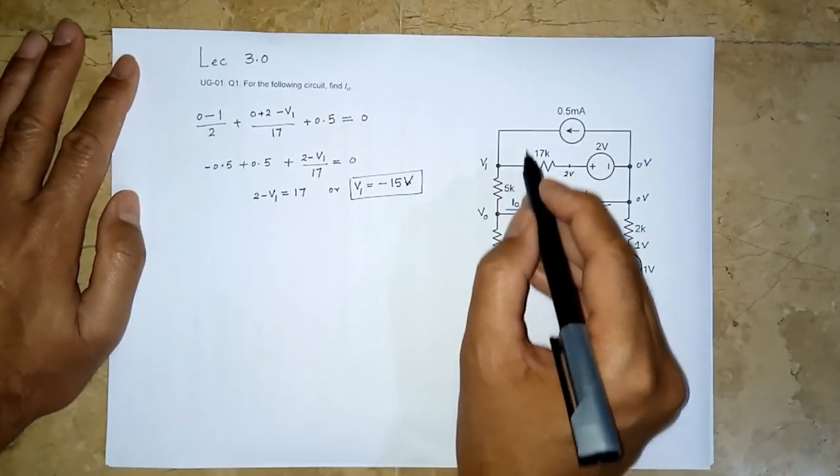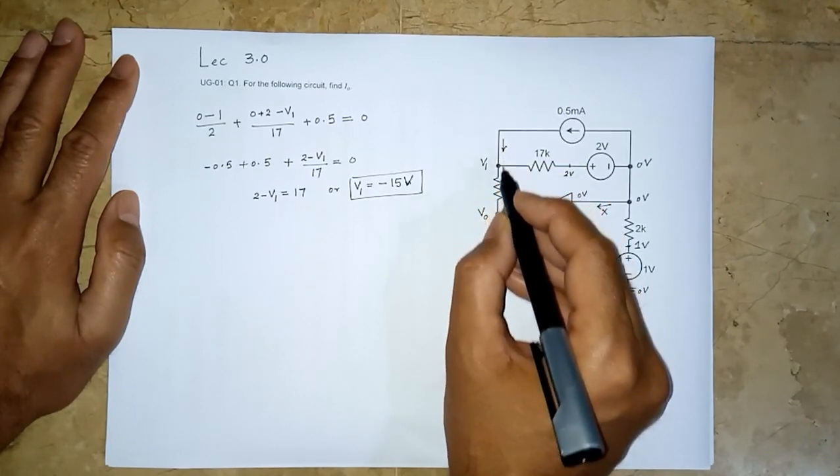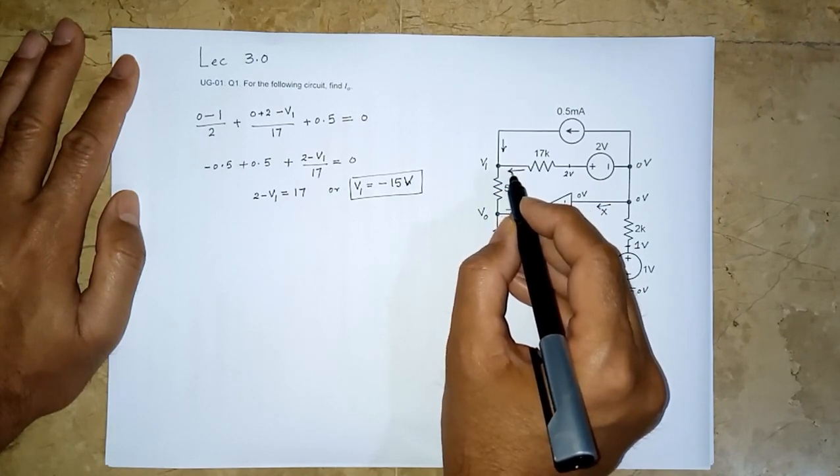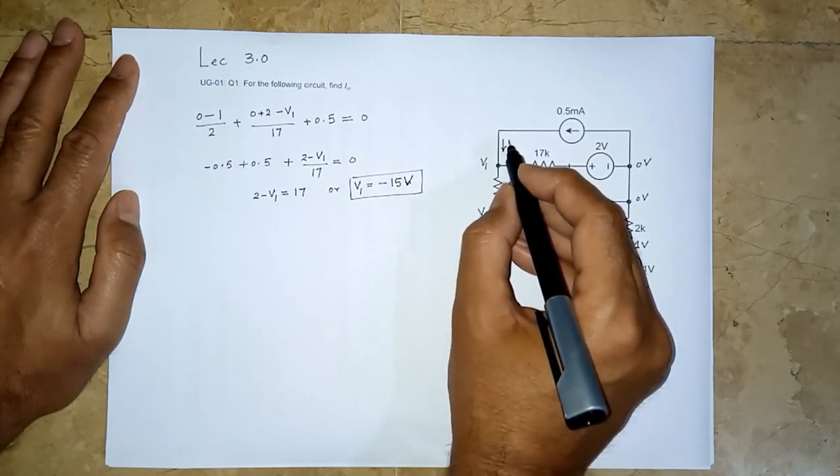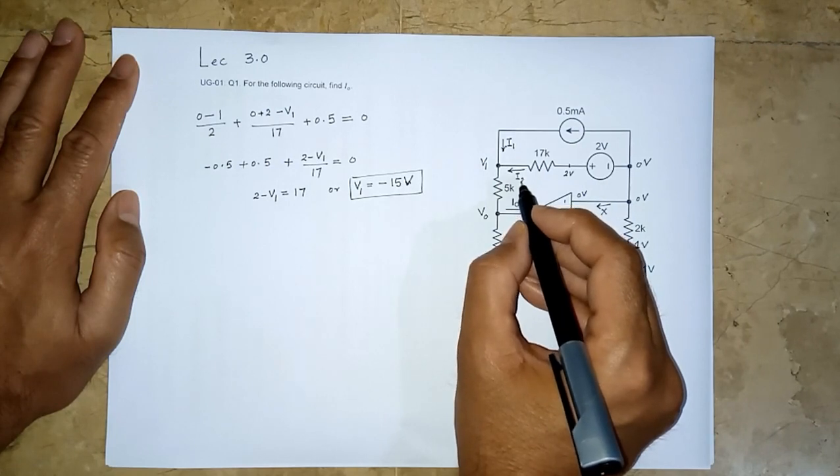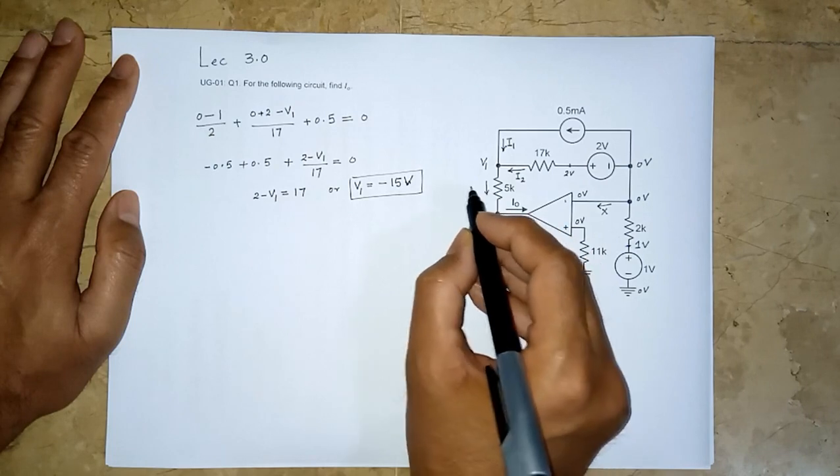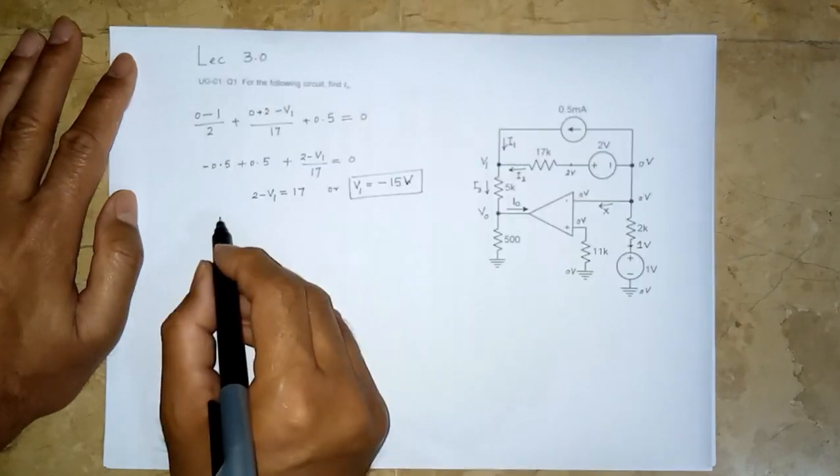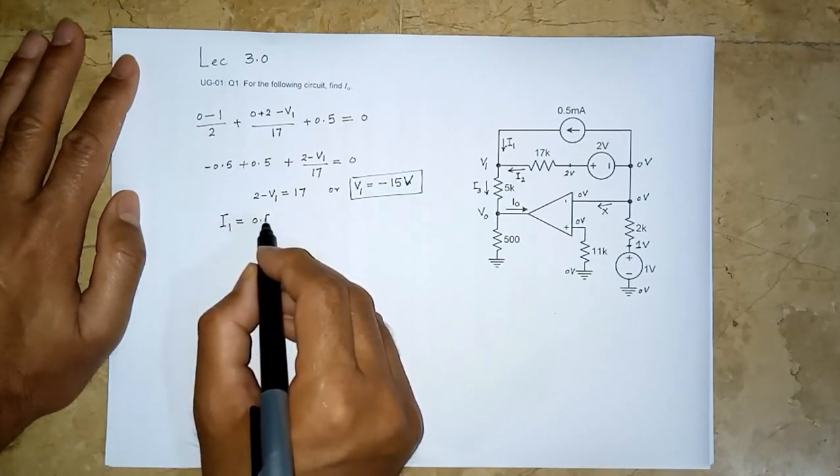However, luckily, we know this current. And now we know this v1, we can find this current as well. So there is 0.5 milliampere coming in from here. Let us label all of these. So we know i1 is 0.5 milliampere. This i2 is to be found, then we can find this. Let us call this i3. So i1 is 0.5 milliampere.